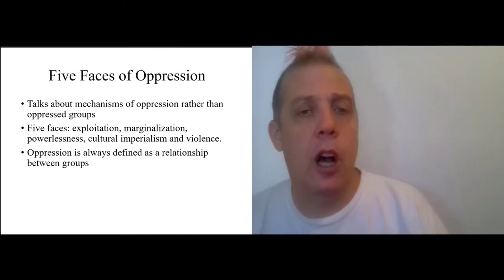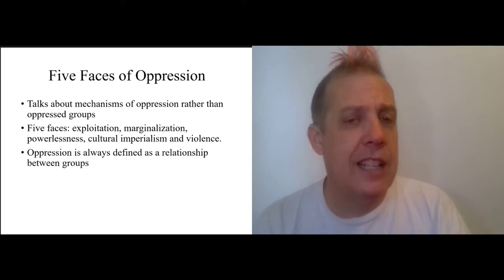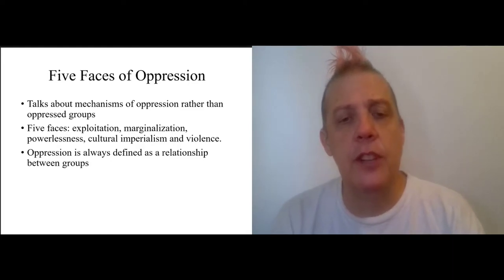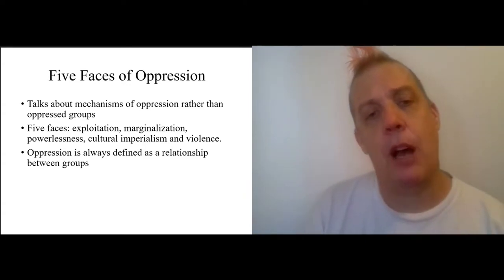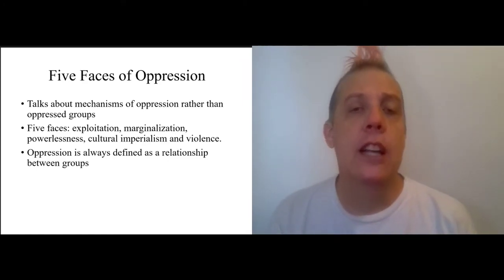The complementary essay was Five Faces of Oppression which talks about mechanisms of oppression rather than individual oppressed groups. And so this gives us a sense of what sorts of things we are trying to deal with when we are dealing with structural injustice. The Five Faces of Oppression were exploitation, marginalization, powerlessness, cultural imperialism, and violence. The important thing to see about all of these is that they were defined as relationships between groups. So exploitation wasn't about, for instance, an individual landlord and an individual tenant. It was the systematic transfer of resources that are the products of labor from one group to another.